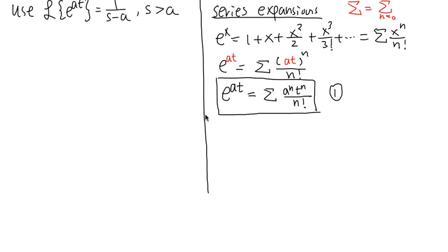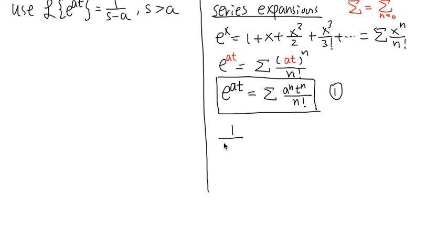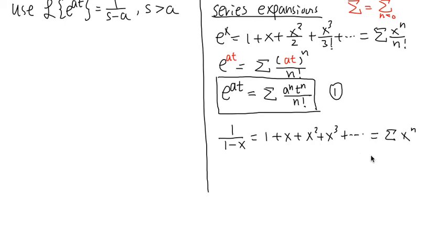Now let's look at the second series we need to use. We are also going to use the series for 1 over 1 minus x, which is 1 plus x plus x squared plus x to the third power, and so on. In sigma notation this is the summation of x to the n power. However, for this case we have to make sure the absolute value of x is strictly less than 1, since this is a geometric series.